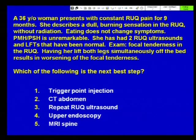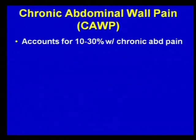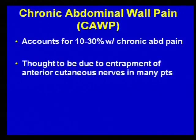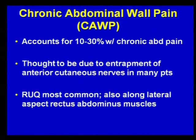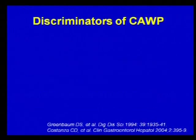Chronic abdominal wall pain accounts for up to 30% of chronic abdominal pain in a referral practice. This is often from entrapment of anterior cutaneous nerves. You may see this tenderness right in the area of a scar such as a cholecystectomy scar, but it may be unrelated to a scar. The right upper quadrant is the most common location, along the lateral rectus abdominis. These patients, much like the last patient, often undergo a whole battery of tests for their abdominal pain, whereas the exam can be quite helpful in suggesting the diagnosis.